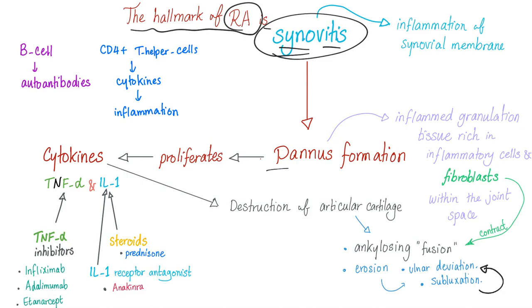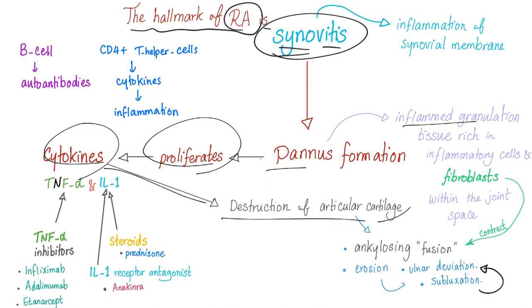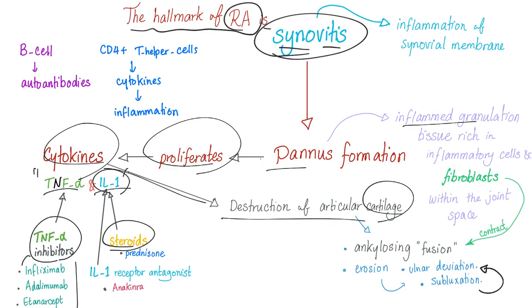The pannus proliferates — it's inflamed granulation tissue producing cytokines like TNF-alpha and interleukin-1, causing more destruction of articular cartilage. Therefore, TNF-alpha inhibitors treat rheumatoid arthritis. Steroids treat it because they inhibit interleukin-1 beta. Interleukin-1 receptor antagonists such as anakinra also treat rheumatoid arthritis by inhibiting interleukin-1.